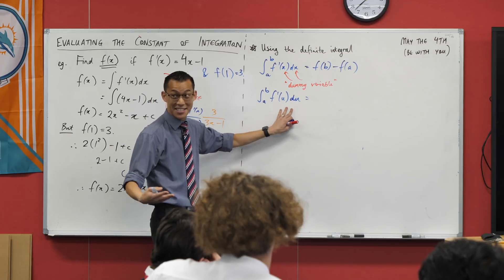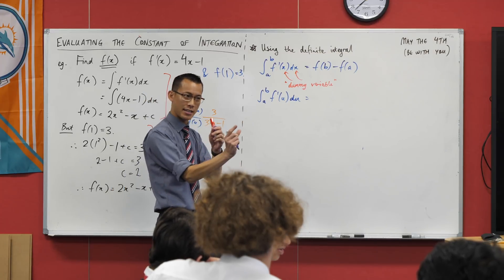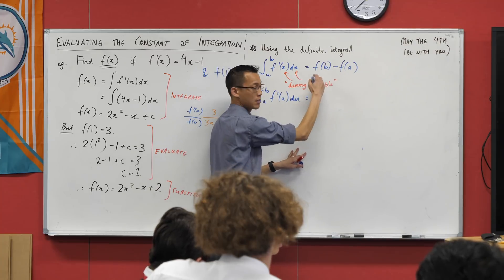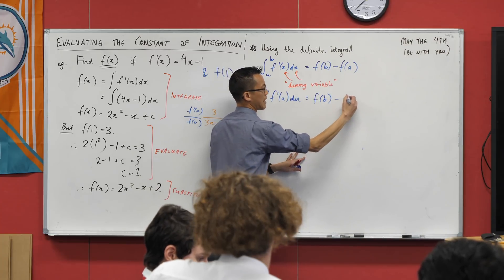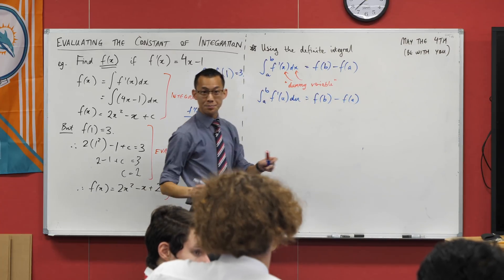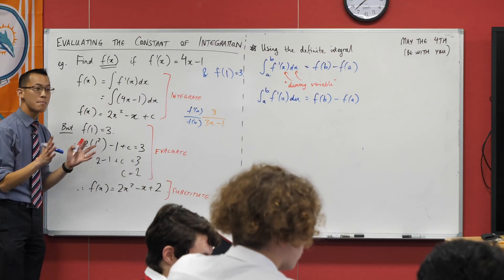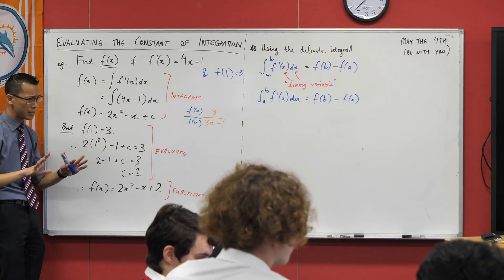Nothing, because the whole point is it's a dummy variable. Doesn't do anything. It's just there to stand in for a moment until I can put real numbers in. So it's still f of b take away f of a. Is that okay?